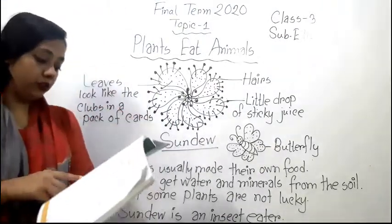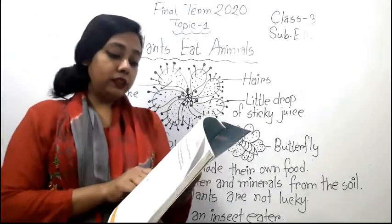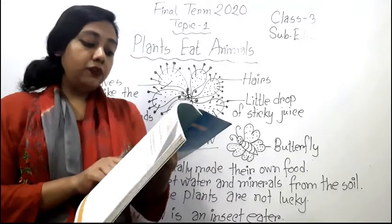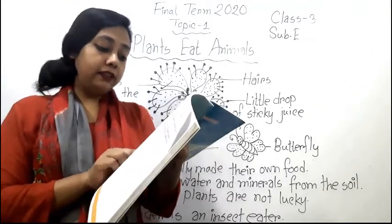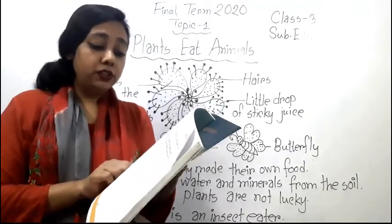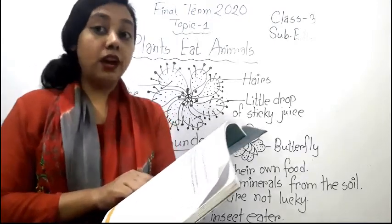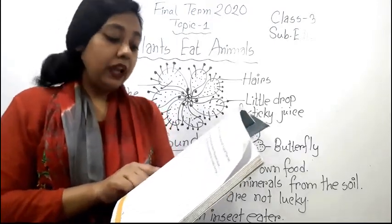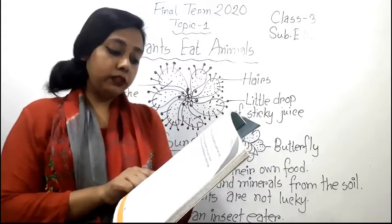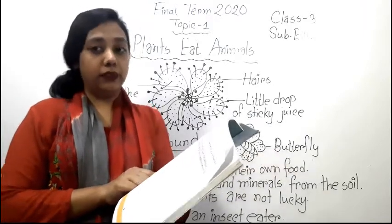The butterfly also thinks the sundew is very beautiful. It flies to the plant and sits on the shining drops. But now the butterfly cannot fly away — it is stuck. The hairs slowly close around the butterfly, hold it tight, and press until the end.